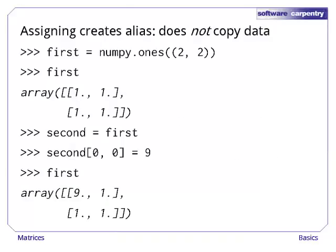As with everything else in Python, assigning an array to a variable does not copy its data. It creates an alias for the original data. For example, let's create an array of ones and assign it to a variable first. Then assign the value of first to second. If we modify an element of second, the changes show up in first since the two variables are pointing at the same chunk of memory.